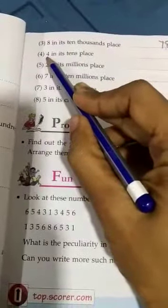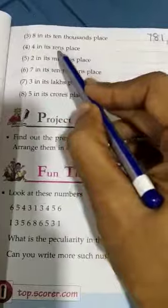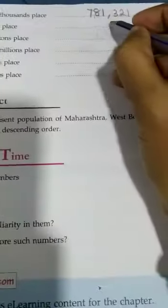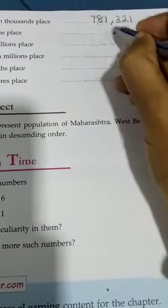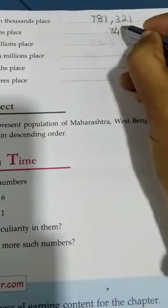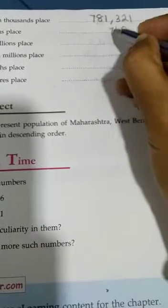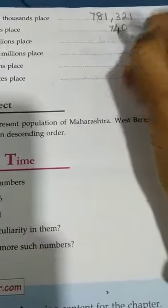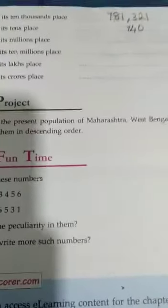Next one: 4 in its 10th place. That is easy — I am writing 740. So here 4 is in the 10th place.